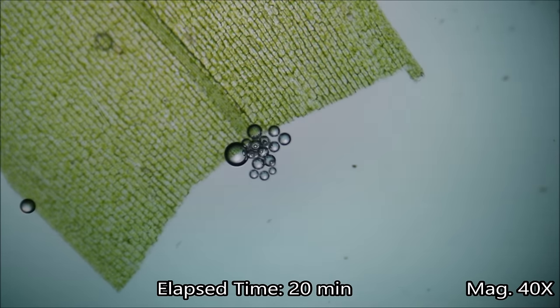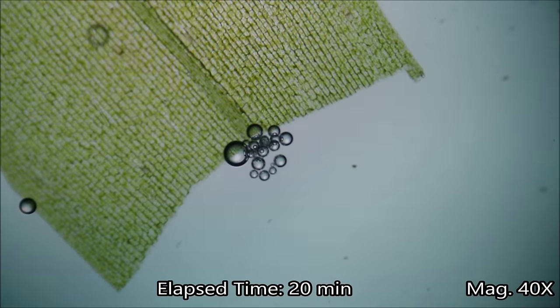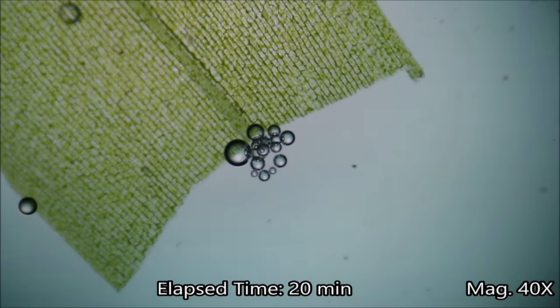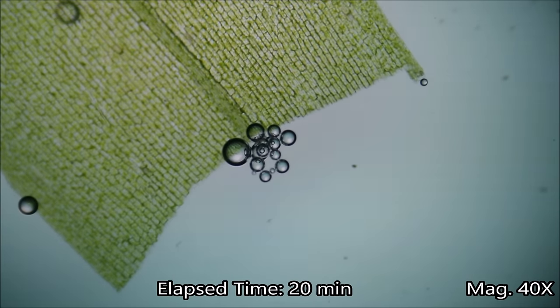This is a plant leaf producing oxygen bubbles by the process of photosynthesis. This footage is sped up in order to show oxygen bubbles growing.